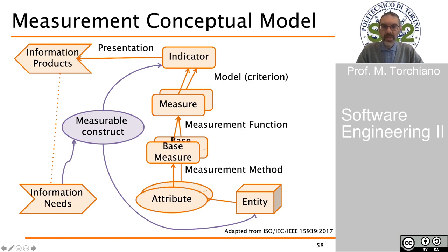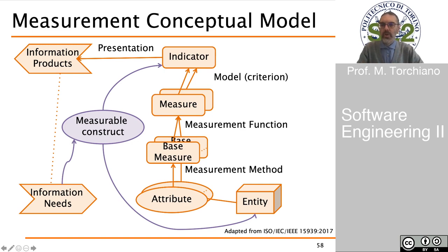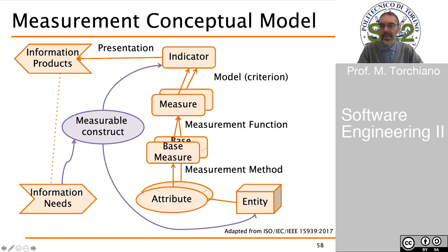A measure by itself is just a number, and a number is difficult to understand. We need a model that allows us to put the measure into perspective — to have criteria to make decisions based on that measure. The result of putting a measure inside a model is an indicator. The indicator addresses our measurable construct and is typically presented in a textual or graphical way inside an information product. An information product typically collects several indicators and addresses the original information need.